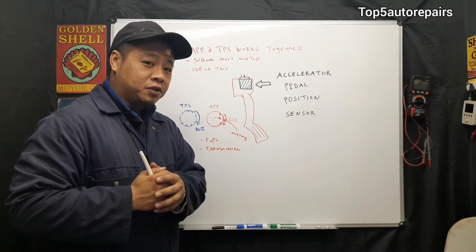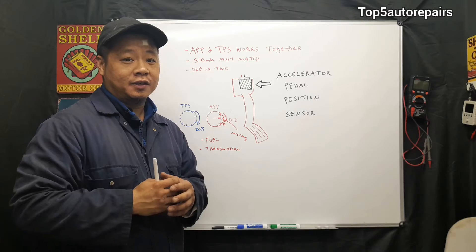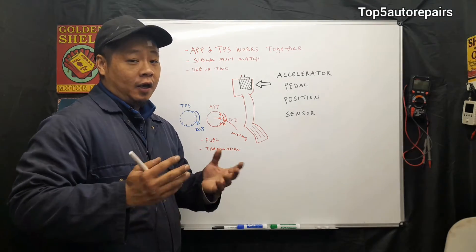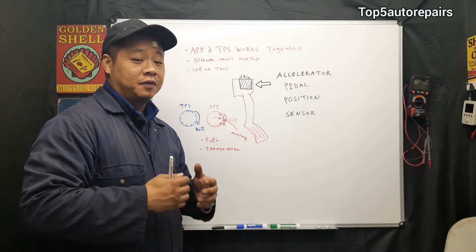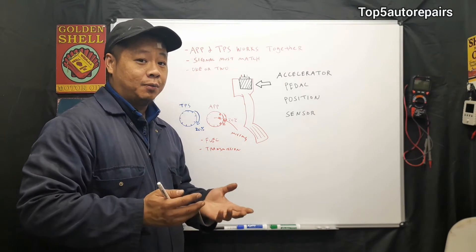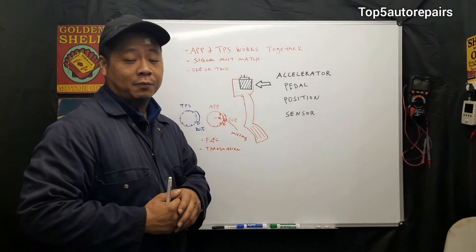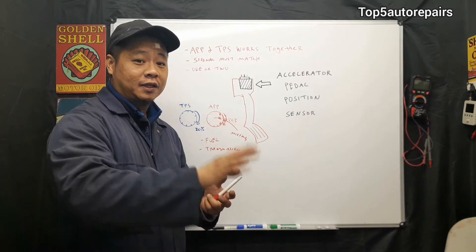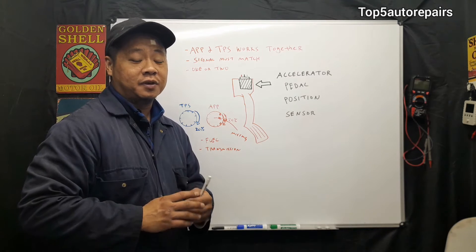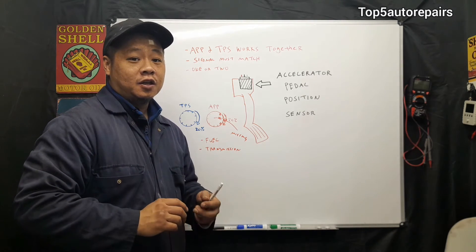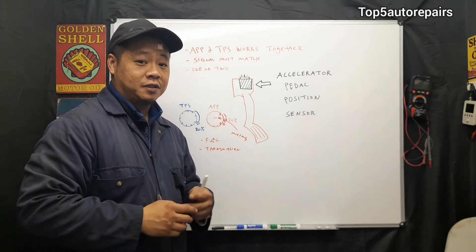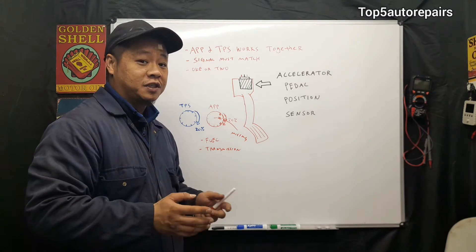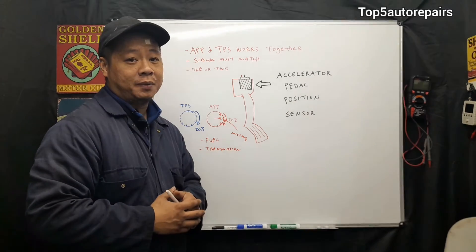The first most common symptom you're going to experience is the check engine light turning on, triggering some sort of APP sensor code. You're also going to experience some sort of acceleration issue. For example, if you step on the gas pedal and the contact point is worn, you may experience erratic acceleration, slow acceleration, or no acceleration.